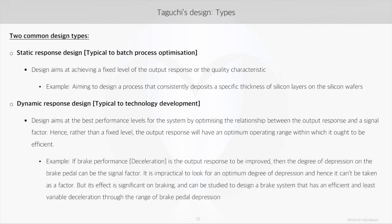The second scenario is a case where we want to optimize the relationship between the output response and the signal factor. Here the response is not at a fixed level, but will have an optimum operating range within which it ought to be efficient. Like the rate of acceleration we spoke of earlier, even the brake performance and its relation with how much the brake pedal is depressed is a similar case. Such scenarios call for a dynamic response design.